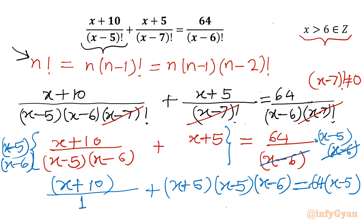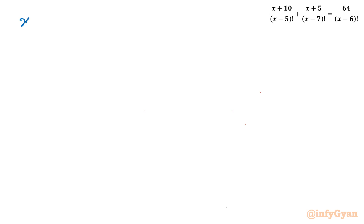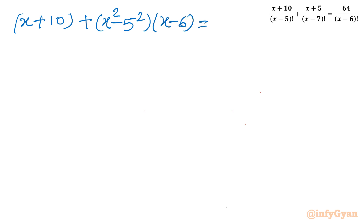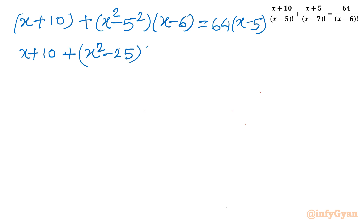Expanding: we get (x+10) plus (x+5)(x-5)(x-6). Applying the difference of squares to (x+5)(x-5) gives (x²-25). So we have (x+10) + (x²-25)(x-6) on the left, and 64x - 320 on the right.